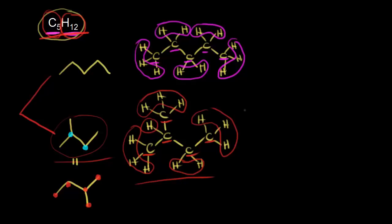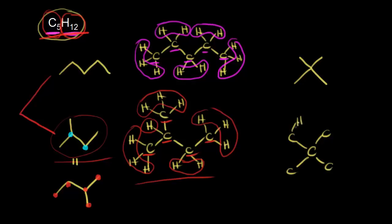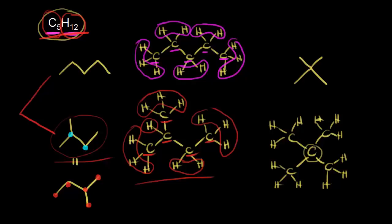We have two structural isomers so far. Let's think about one more. We can no longer do four carbons in a chain, so we go down to three. We start with three carbons in our chain. We need a total of five carbons, so we need to show two more carbons added — and we add those two carbons to our central carbon. Let's draw out all the carbons and add in our hydrogens.